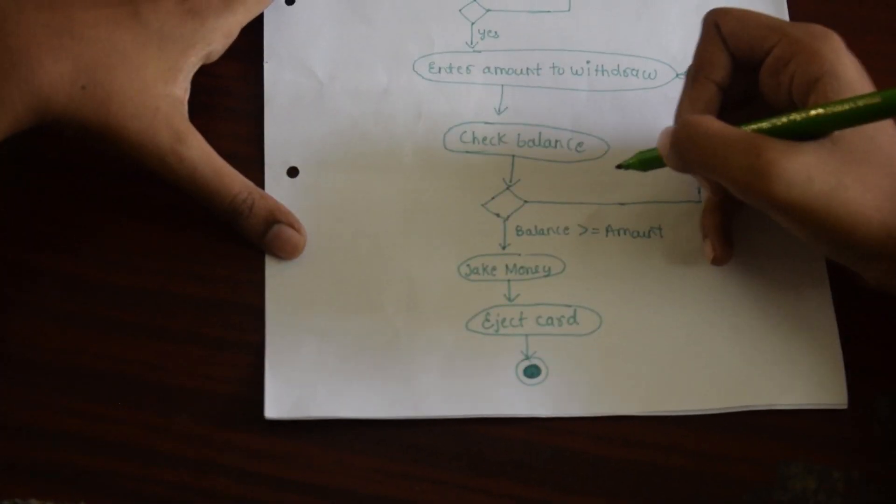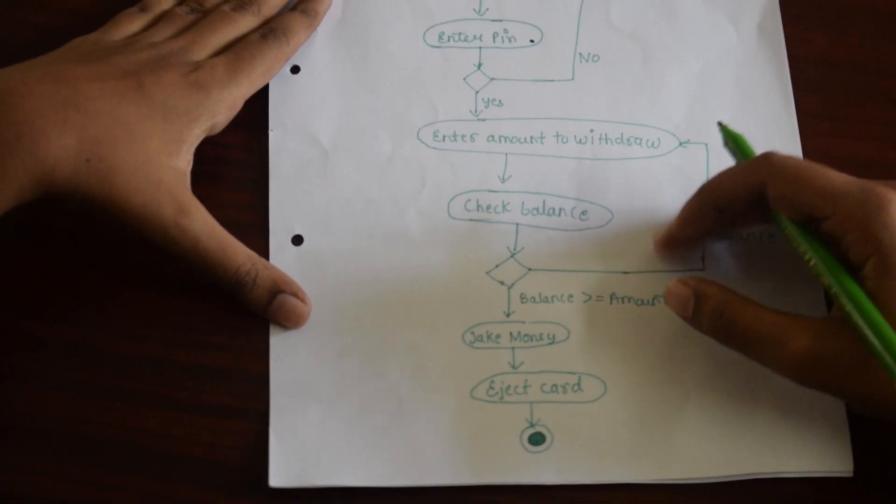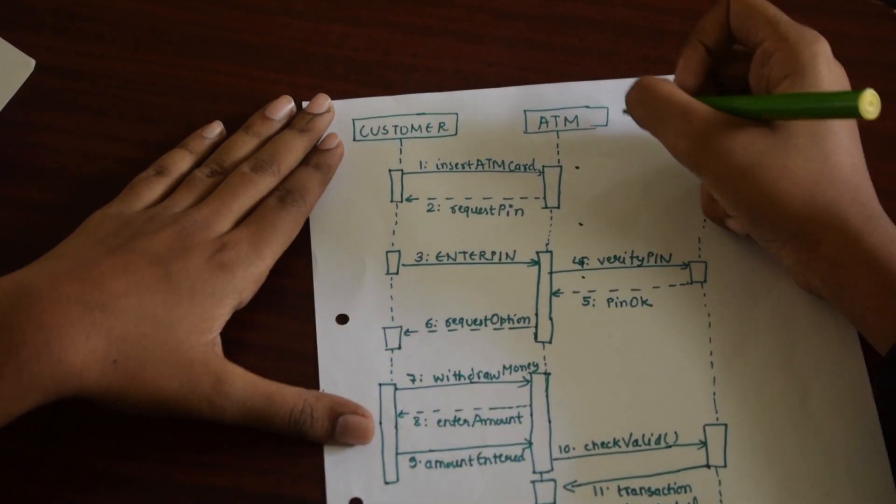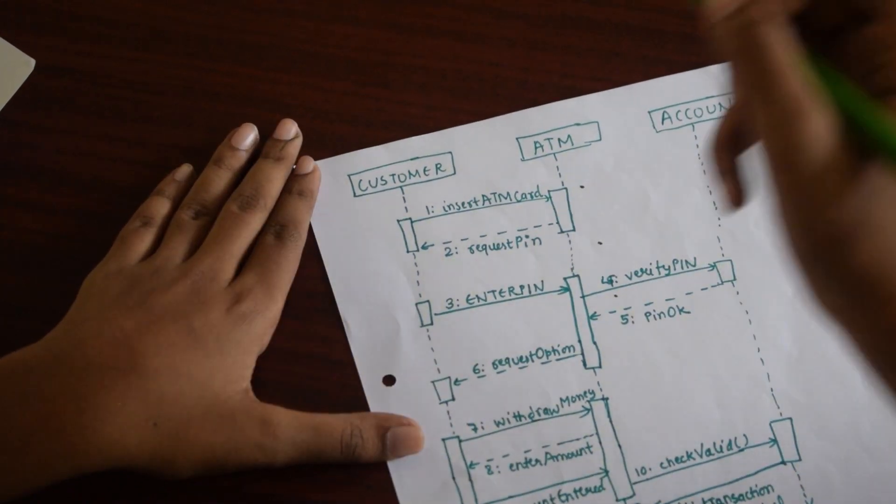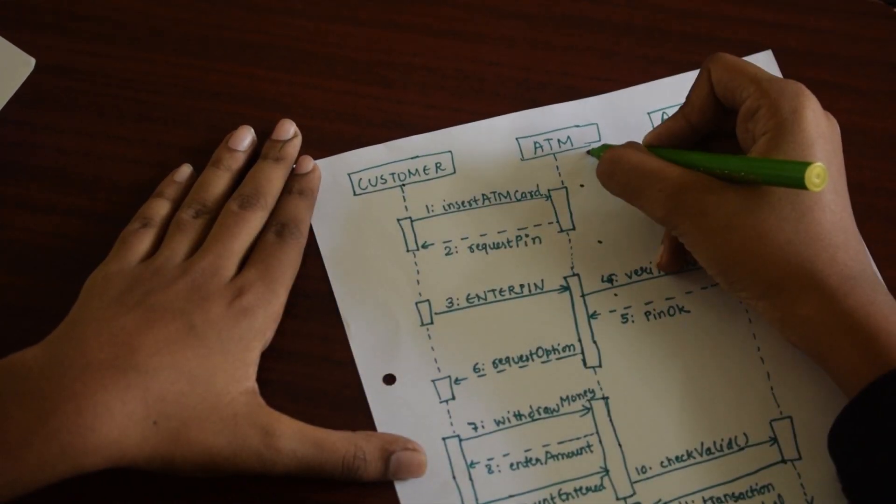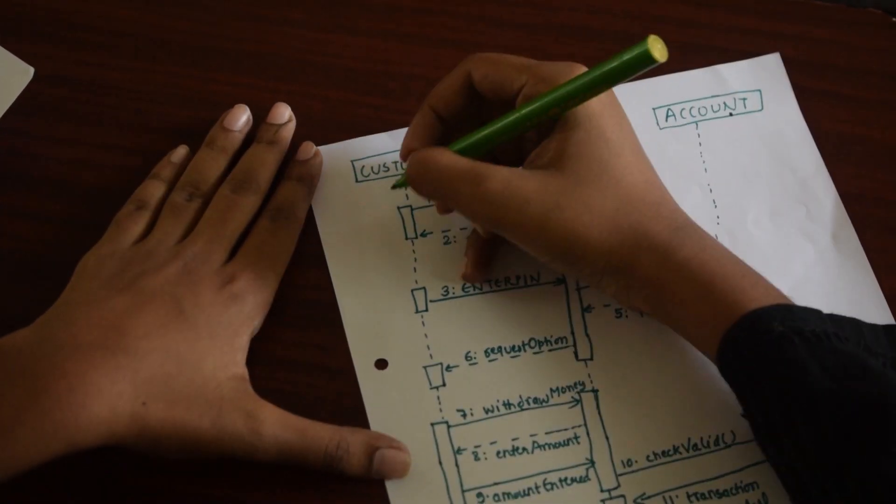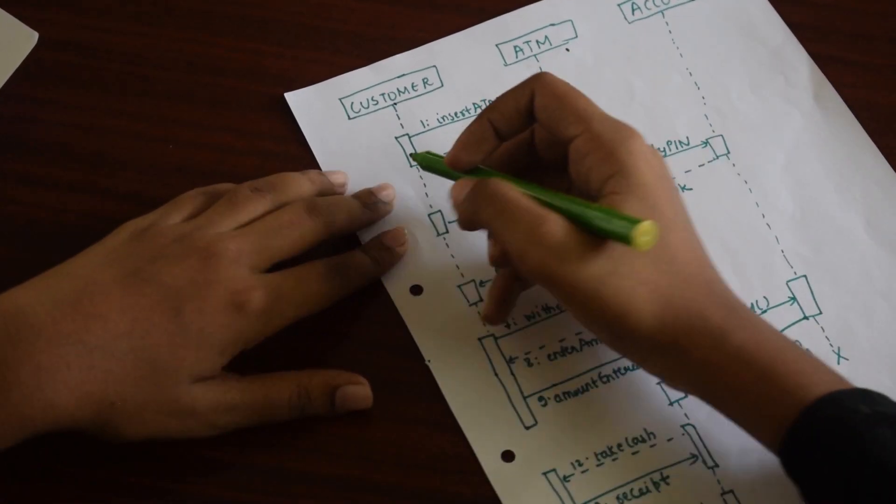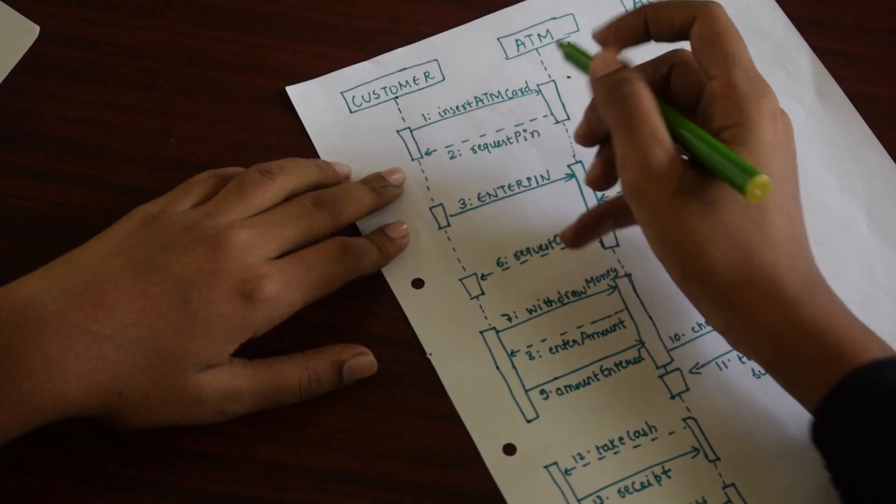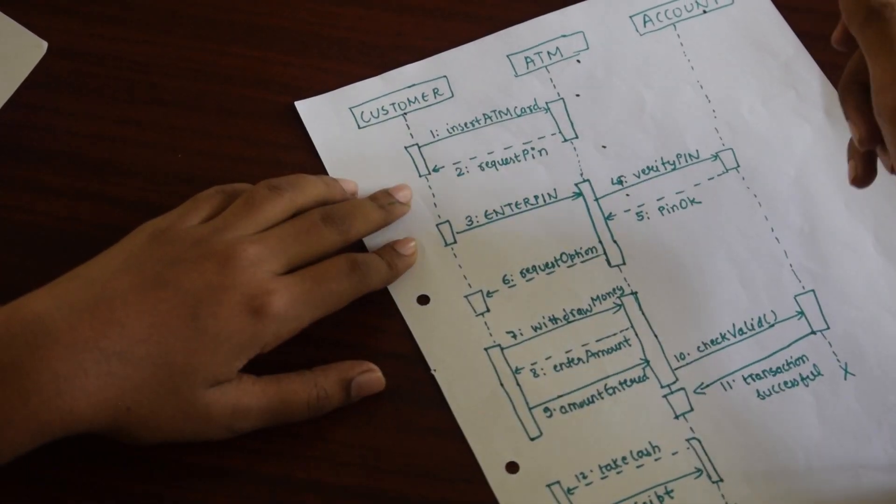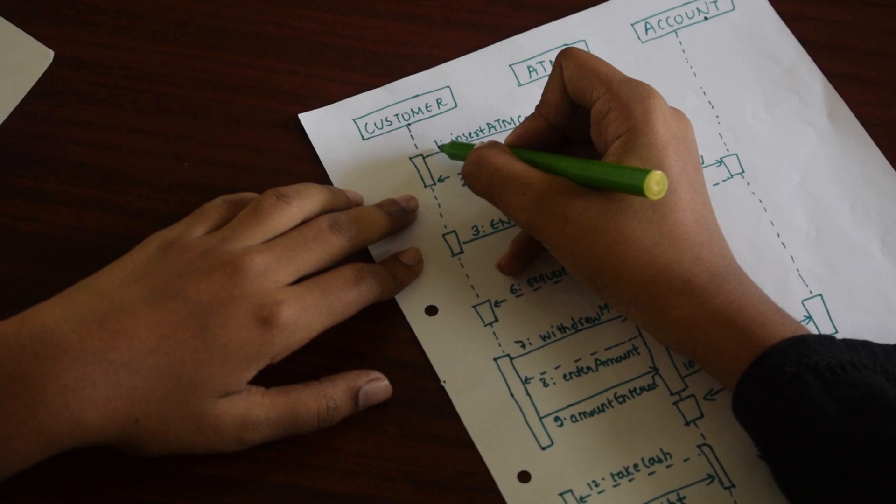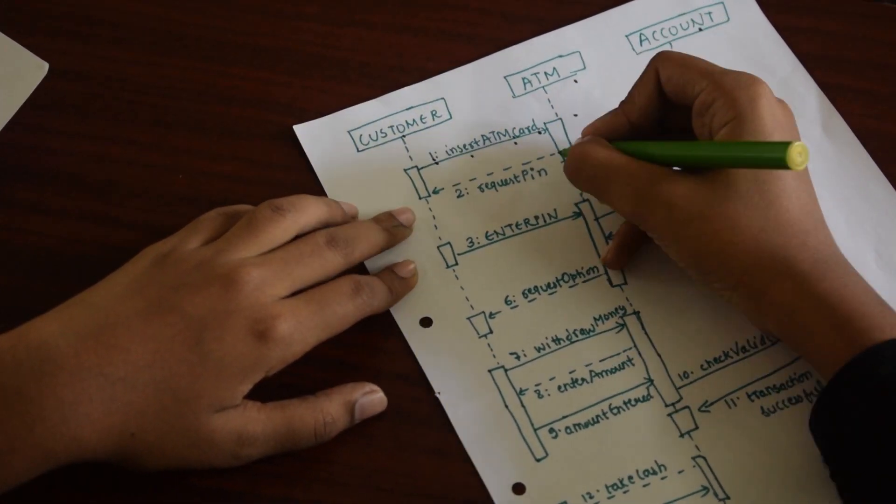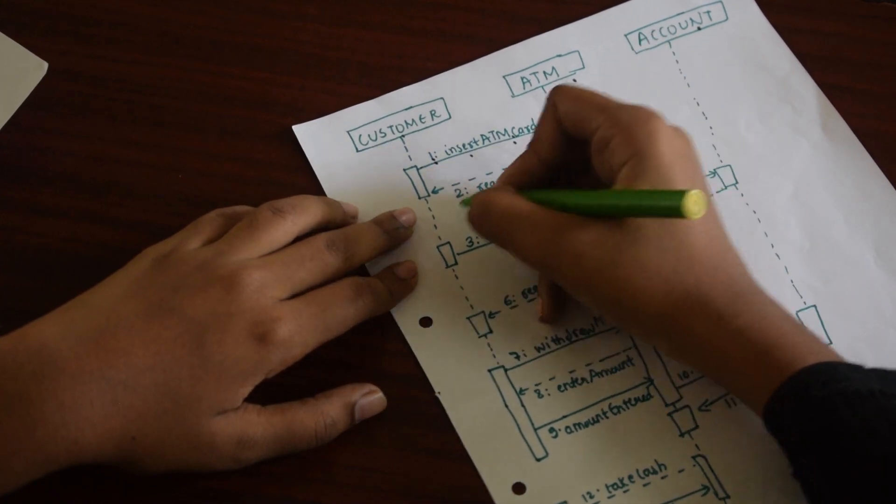Now, we will see the sequence diagram corresponding to this activity diagram. In the sequence diagram, we have three objects, as made in the use case diagram: customer, ATM, and account. All have their individual lifelines. Now, first, a customer will insert the card. That is, one request sent to the ATM machine. So, the first sequence, it will insert ATM card. The ATM card is validated and requests a PIN.